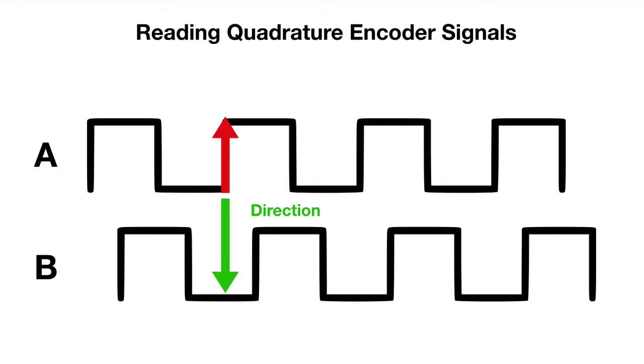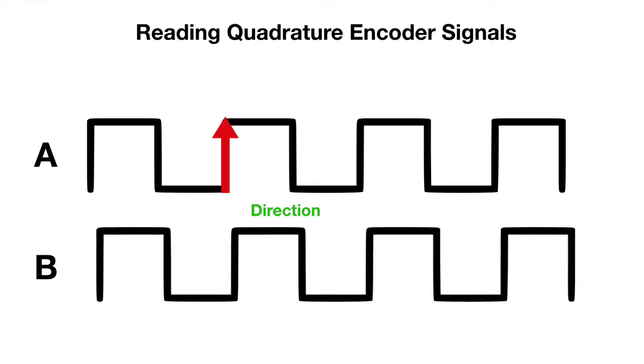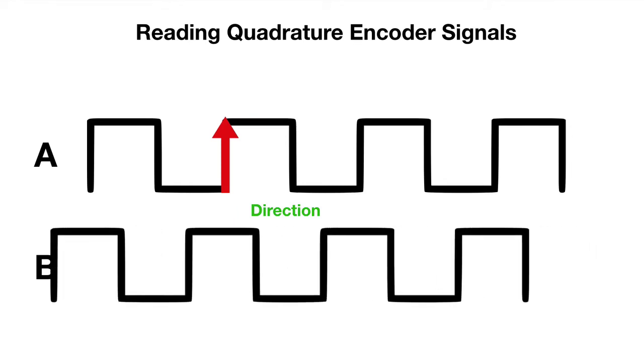When we see this rising edge of A, we go look at the B signal. If B is low, that means it's moving in one direction - let's say clockwise. This allows us to see that direction. Now, let's assume the wheel is turning the other direction. When we see that rising edge on A, we go look at B and it's high. We know that it's turning in the opposite direction. This is a simplified way to visualize this - there are other ways to visualize when you're moving the other direction in terms of the edge you're keying off from. But for illustration purposes, we're keying off the rising edge of A, looking at B. If it's low, we're going one direction. If it's high, we're going the other direction.